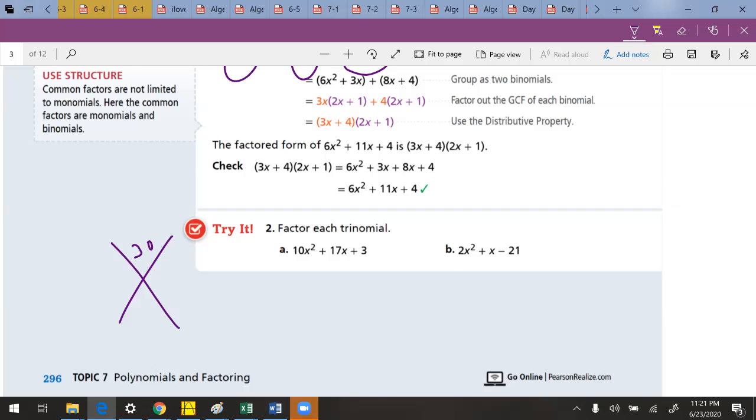So we can do the magic x pretty easily. 30 on the top, 17 on the bottom, that's going to be 15 and 2. We use those to change the middle. 10x squared plus 15x plus 2x plus 3. And then my next step, as you see over here, we group up two terms at a time to see what we can take out. Here, I can take out a 5 and an x. So I'm left with 2x plus 3.